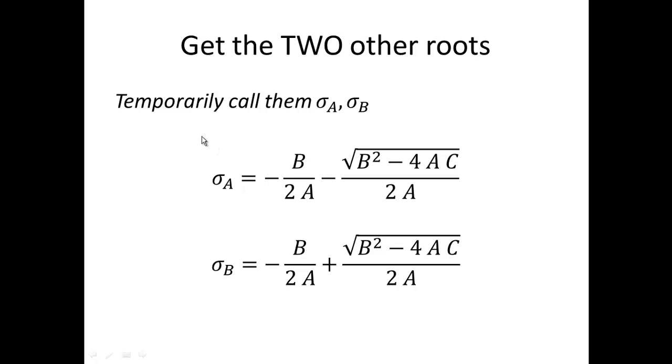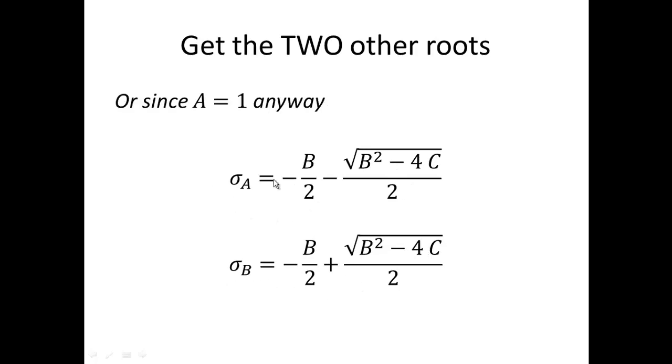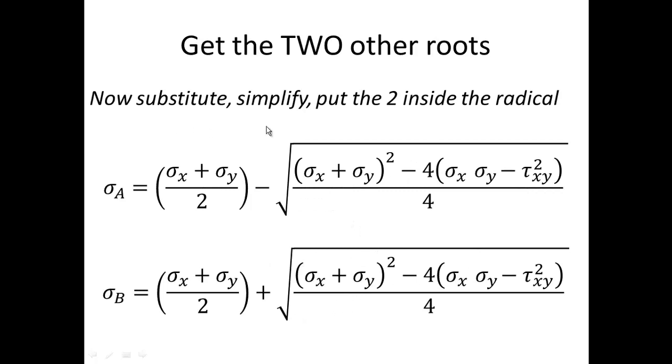So let's get the other two roots by using our well-known solution to that quadratic. And I'm going to temporarily call the roots sigma a, sigma b. So I'm going to let sigma a take the minus solution, and sigma b take the positive solution. Now since I have a equals one anyway, it simplifies a little bit more. Then I can stick in those original values I had for b and c, and I can put the two that I had outside the radical, I can stick that inside the radical after I square it.